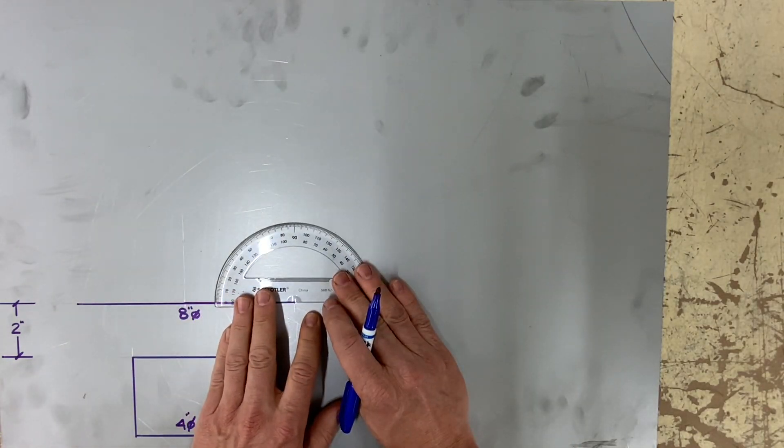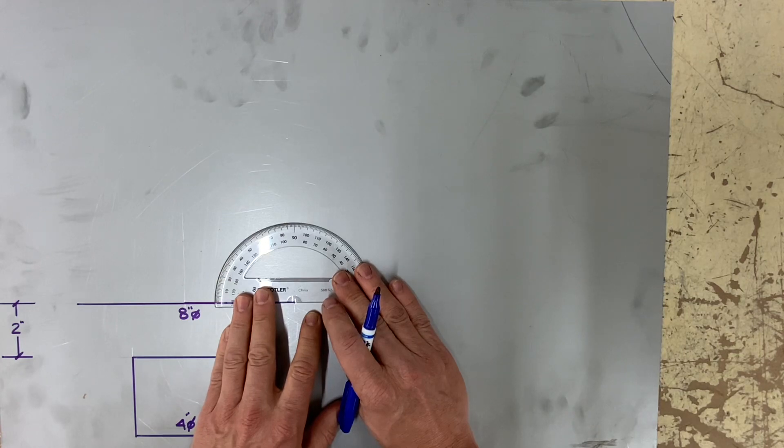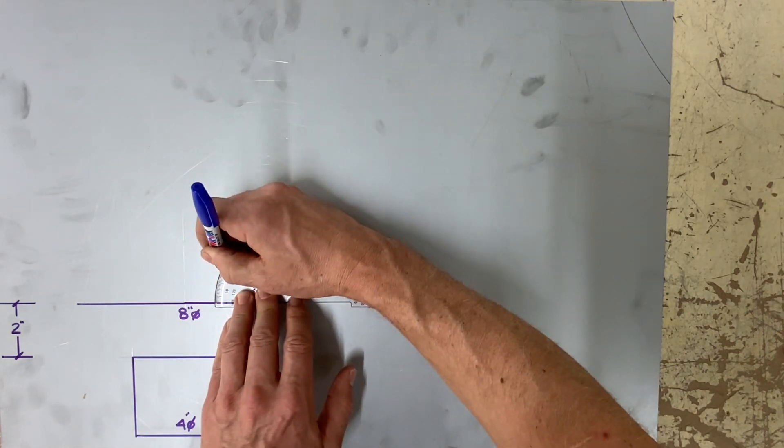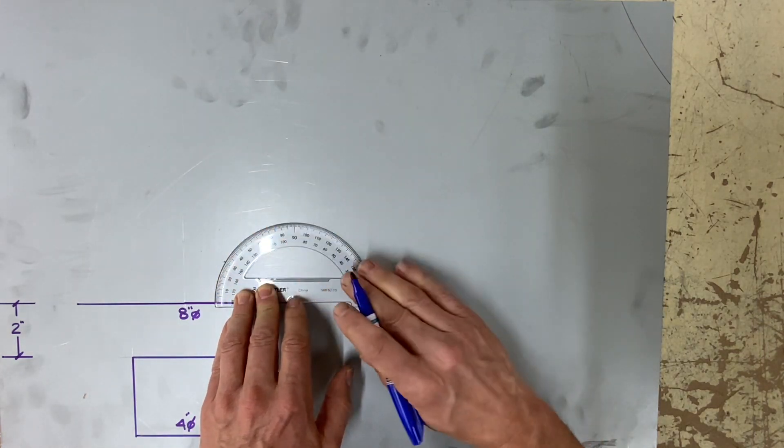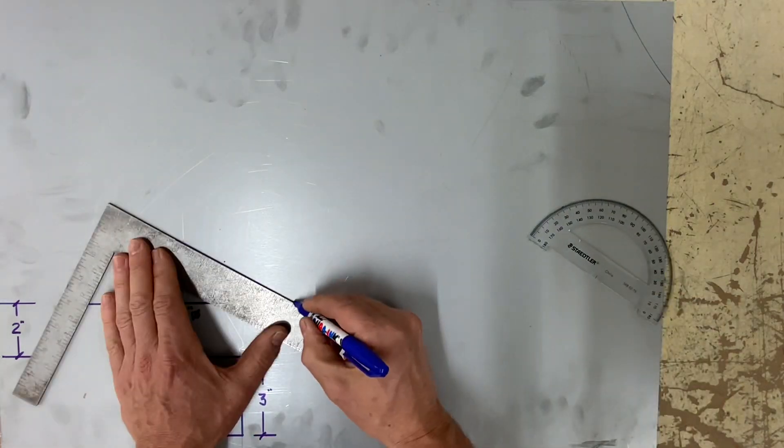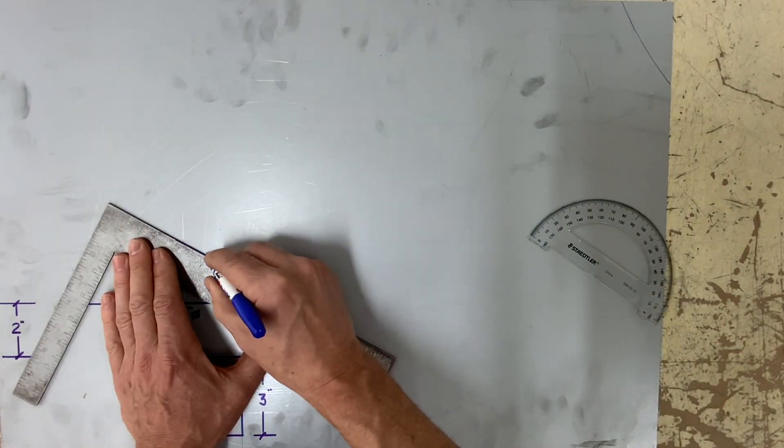And all rain caps should have a slope of 30 degrees and there's a few different ways to find 30 degrees. I just use my protractor.